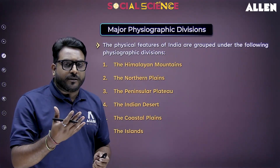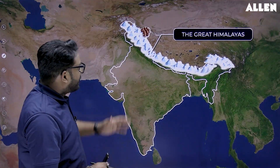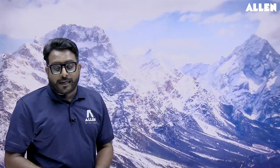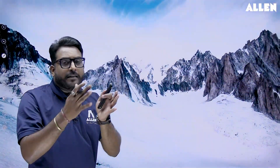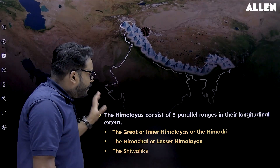The first physical feature of our country is the Northern Himalayas, or we can say the Great Himalayas. They are stretched over the northern boundaries of our country and run in the direction from west to east, or we can say from the Indus to the Brahmaputra.